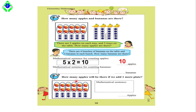Now for the next question — the mathematical sentence for counting bananas. There are four columns, and each bunch has five bananas. The mathematical sentence is five into four. Five into four is equal to twenty, so the answer is twenty bananas. So there are ten apples and twenty bananas — that is the solution to these two questions.